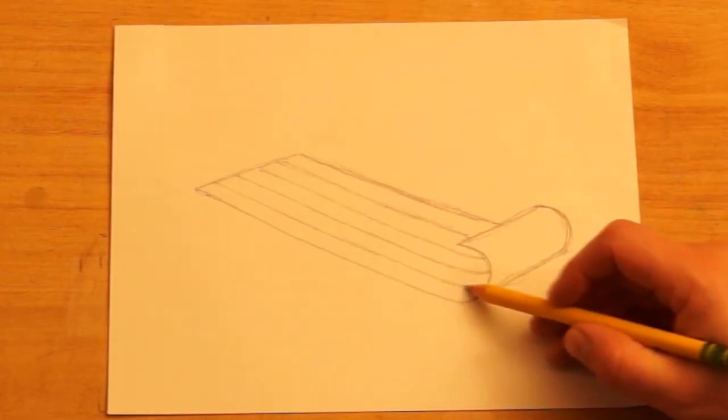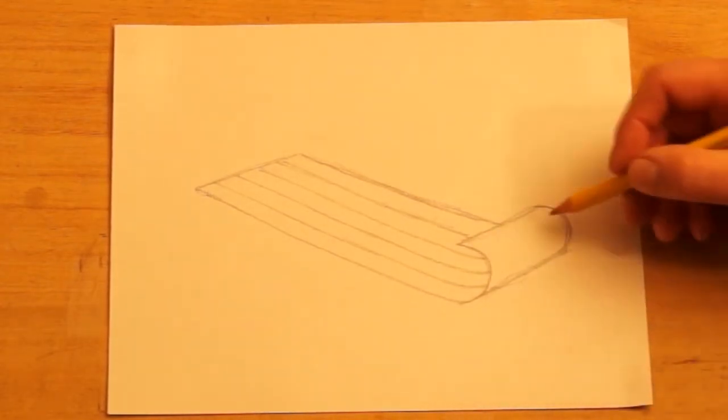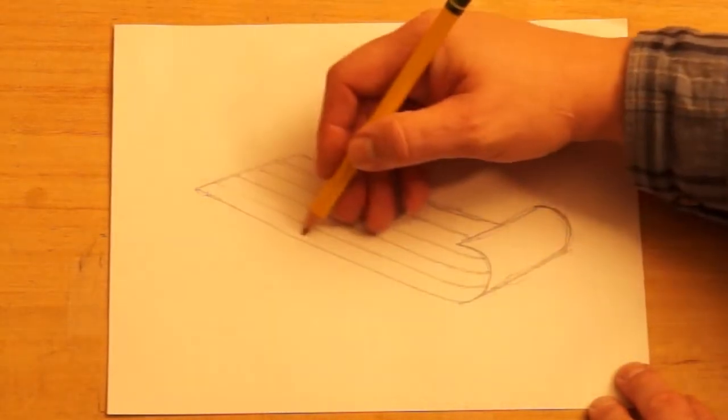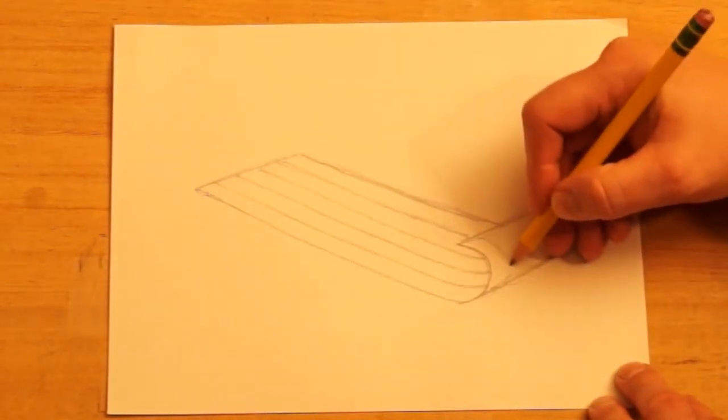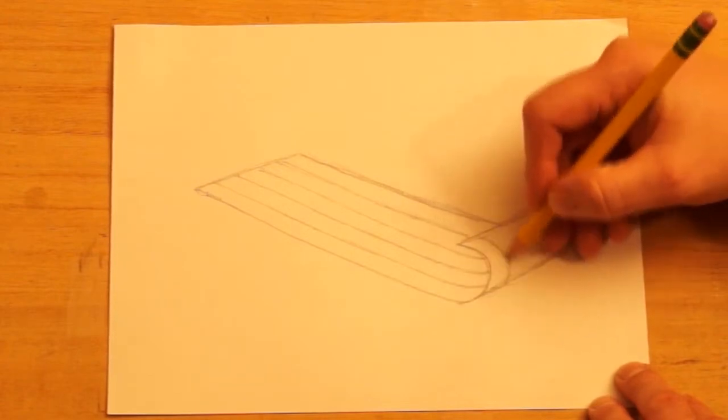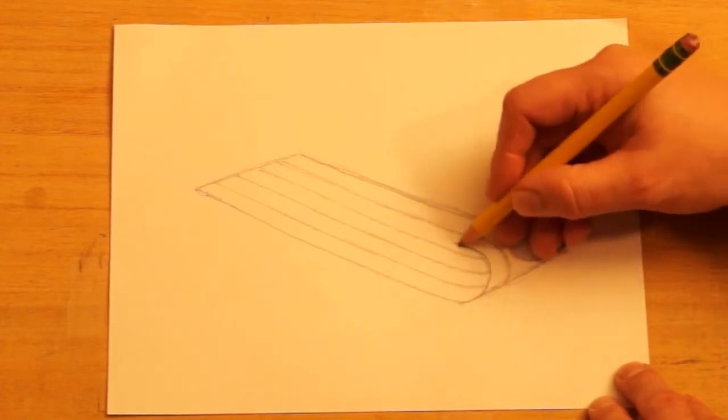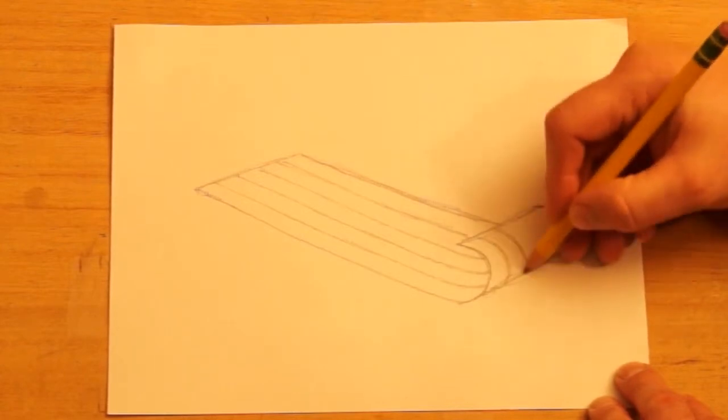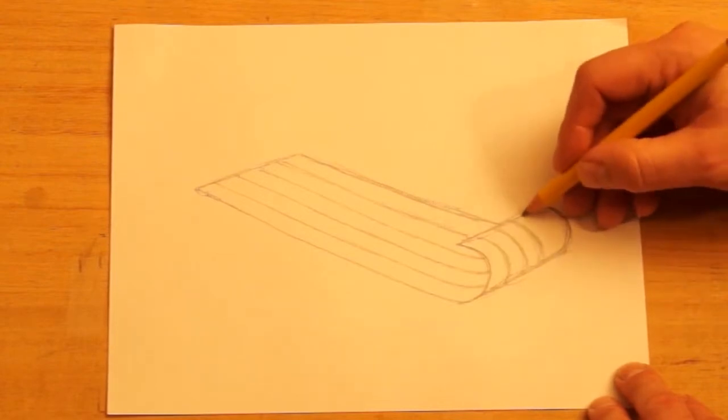Okay, now these planks curve around in the front so I need to draw curves that are the same width as the boards back here. And they're all going the same curve as this outside line, so I just draw curves across here. One more.